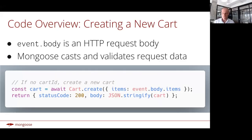Creating a new cart is easy. The cart model has a create method that takes in a JSON object. In this case, we're creating a new cart with an array of items passed in through the HTTP request body. Mongoose is responsible for casting and validating the request data — so you're just taking data from the HTTP request body and passing it into Mongoose, relying on Mongoose to make sure that items corresponds to the schema for the cart model.